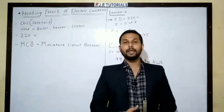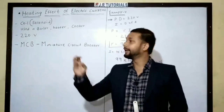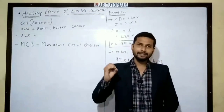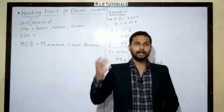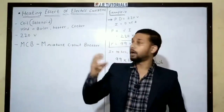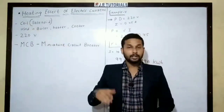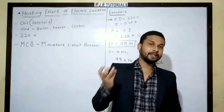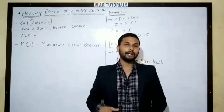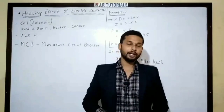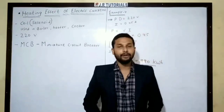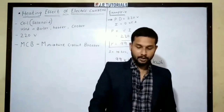In this case, you can see the heater or cooker. We have a lot of materials which are used by wires. This is the coil — the coiling material — and this is the heating effect.